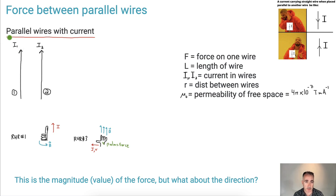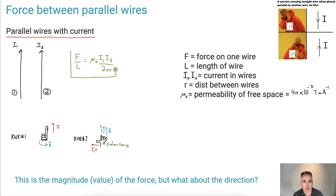Our data booklet has a nice equation for us. It says that the force per unit length — that's important here — is going to be mu zero times I1 times I2, all over 2 pi r. This is an absolute force, but if you divide it by the length, then it tells you the force per meter, so to speak.